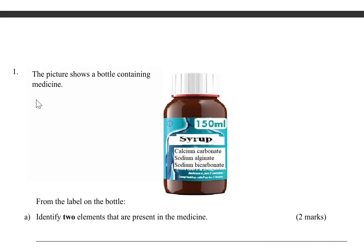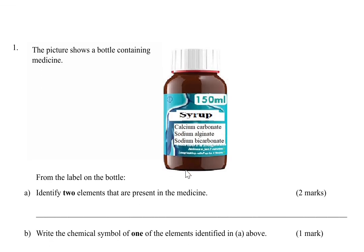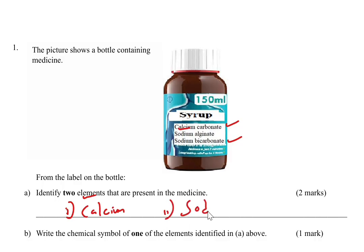The first question reads: the picture shows a bottle containing medicine. From the label on the bottle, identify two elements present in the medicine — two marks. We want two elements. You can see we have compounds like calcium carbonate and sodium bicarbonate, but we want elements. For example, calcium is one element, sodium is another, and carbon from carbonate is another. Give any two and you'll score two marks.